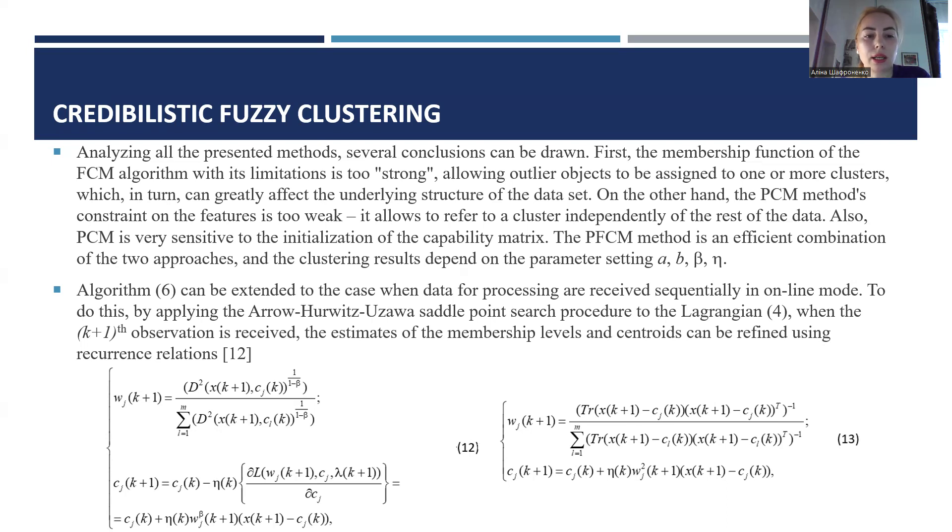Algorithm 6 can be extended to the case when the data for processing are received sequentially in online mode. To do this, by applying the Arrow-Hurwitz-Uzawa saddle point search procedure to Lagrangian form, when the k plus 1 observation is received, the estimates of the membership levels and centroids can be recalculated using recurrence relations, next formulas.